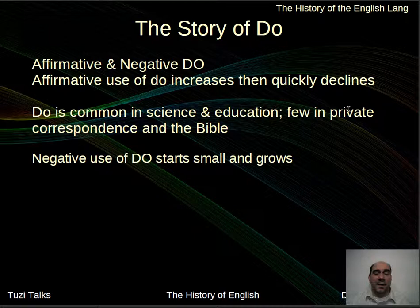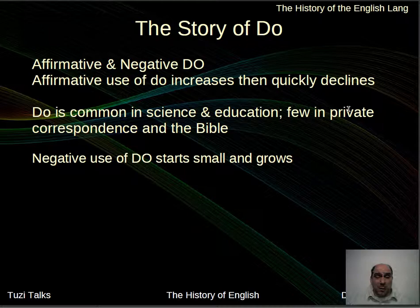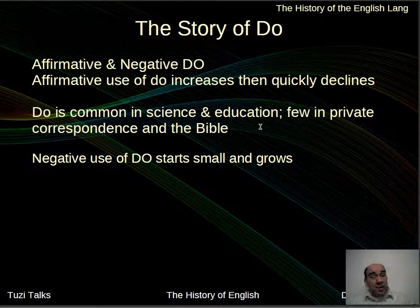Do is also used with the negative and affirmative. Affirmative use of do increases quickly and then began to decline. Do was common in science and education but used far less in private correspondence and in the Bible. The negative use of do begins small and grows more popular: 'I go not' becomes 'I do not go'; 'I know not' becomes 'I do not know.' Do began to be used more to hold a space for the negative, which we can track through the corpora data.